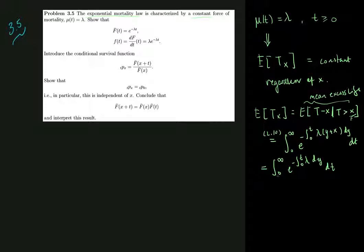The exponential mortality law also allows you to theoretically become infinitely old. We won't think too much about that, but the thing is, if the mortality is constant, then so is your mean excess lifetime. That's pretty interesting.